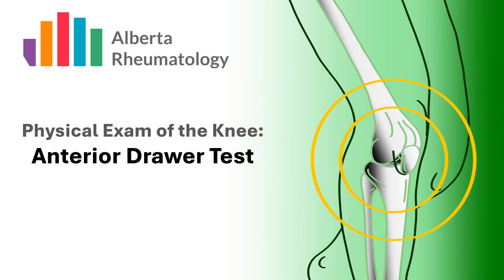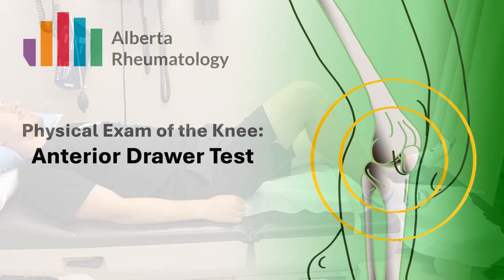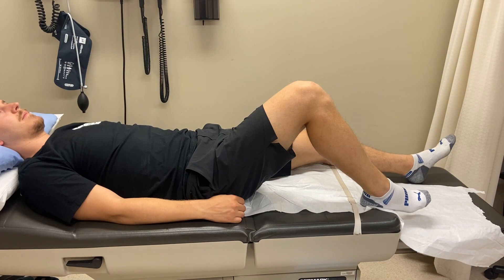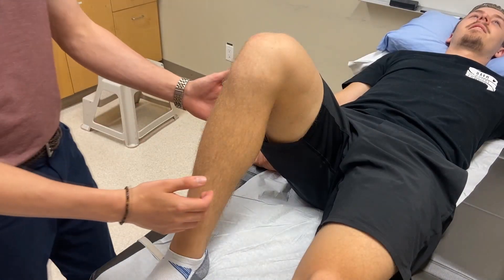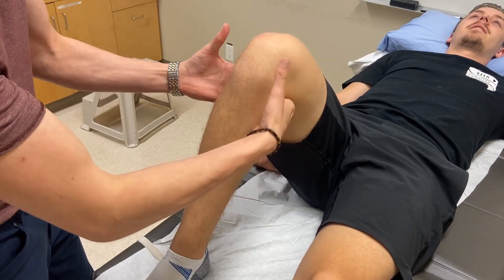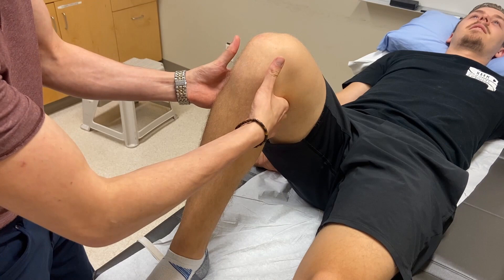The anterior drawer test is used to determine the laxity or integrity of the anterior cruciate ligament. While not often applicable in most rheumatology assessments, it is important to highlight some special considerations when performing this test on rheumatology patients. Begin with the patient in supine with their knee bent to 90 degrees and their foot flat on the examination bed. With one hand on either side, grasp around the patient's lower leg just distal to the bend of the knee, such that your fingers can push directly on the back of the patient's tibia.